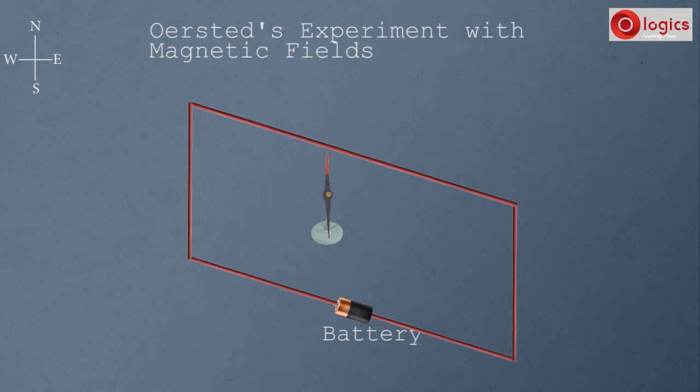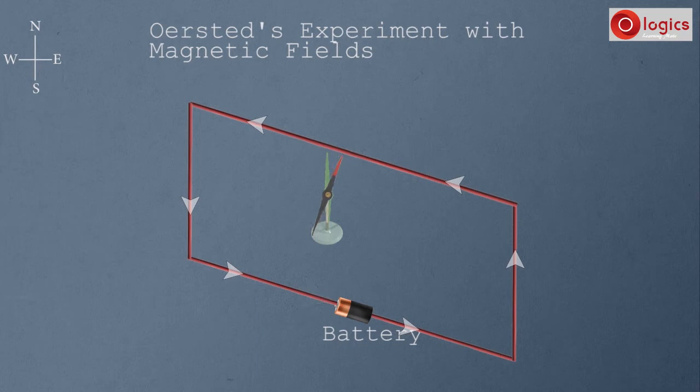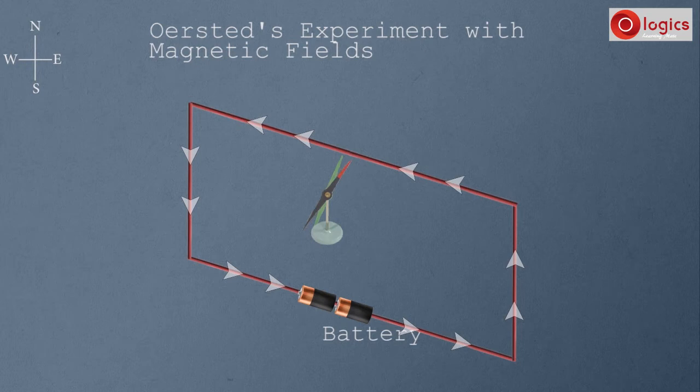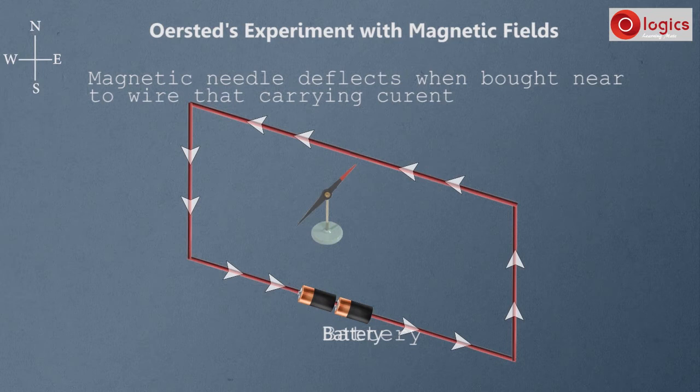Now allow current to pass through the circuit. Observe the sudden change in direction of the magnetic needle. The needle's north deflects towards east. If the current is increased, the deflection of the needle towards the east direction also increases.